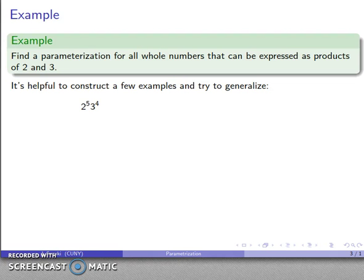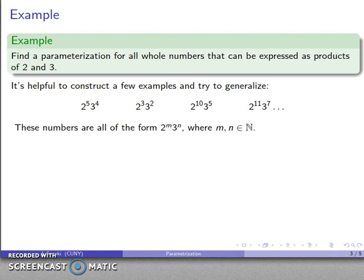For example, a number that is a product of 2s and 3s, so I might take 2 to the 5th, 3 to the 4th, or maybe I'll take something like 2 to the 3rd, 3 to the 2nd, or 2 to the 10th, 3 to the 5th, 2 to the 11th, and so on and so forth. And my generalization, well the thing I notice is that all of these numbers look like 2 to the m, 3 to the n, where m and n are in the set of natural numbers. And so here's my parameterization of these numbers.